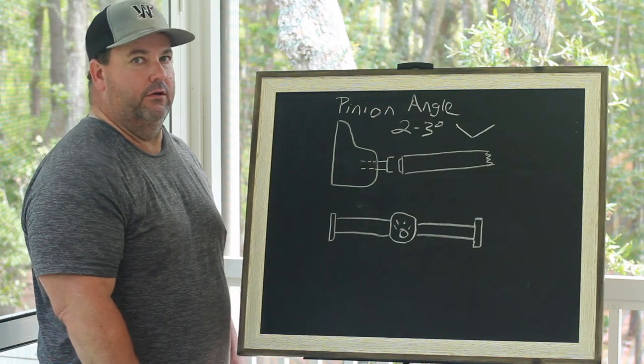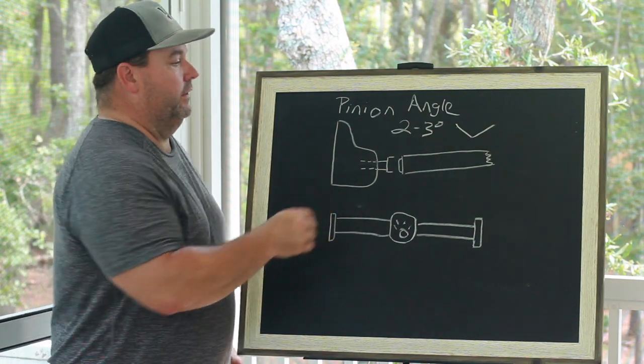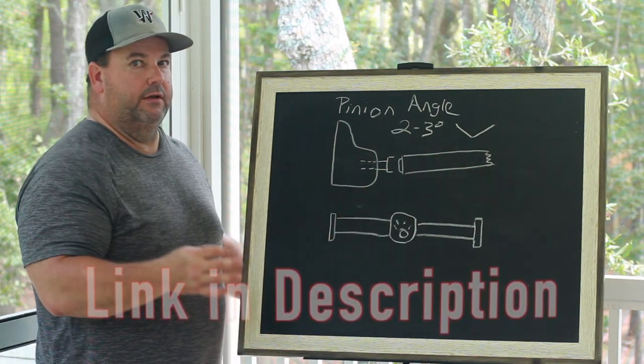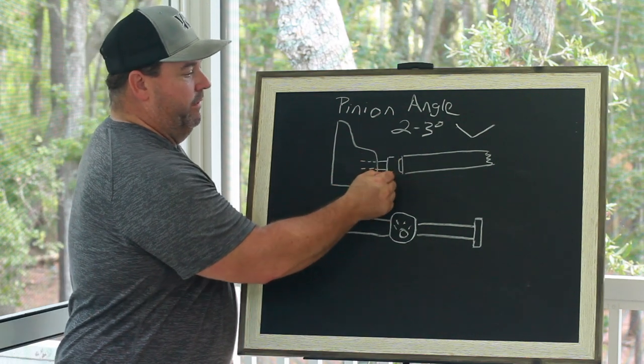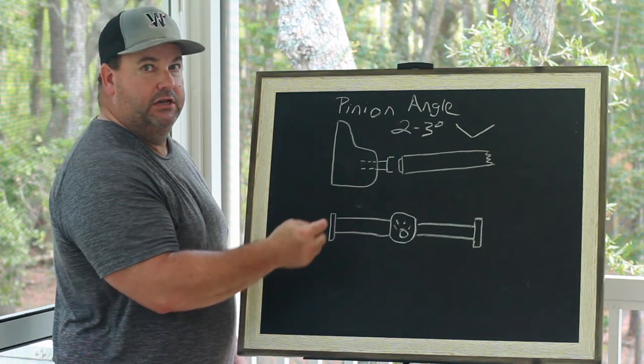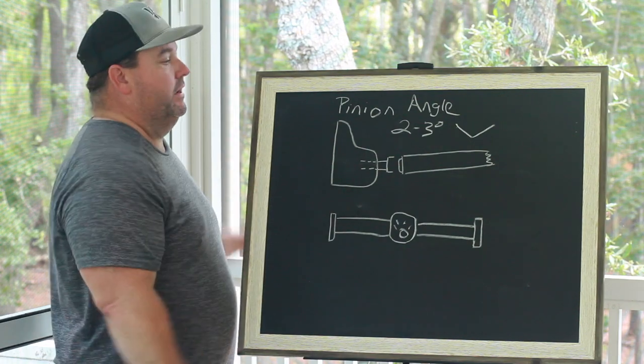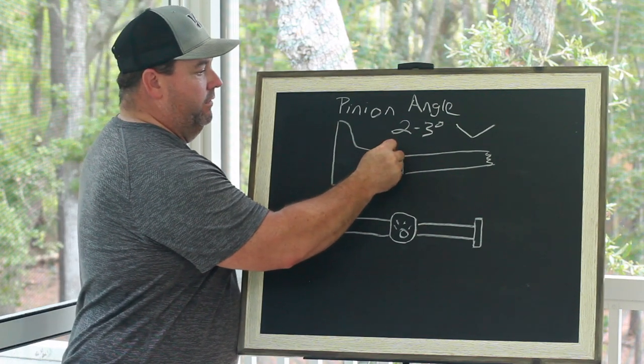So what I do is I have just a budget friendly protractor that we put on the pinion, and we use a chrome moly machined pinion yoke. And what we do is we get this angle right here.